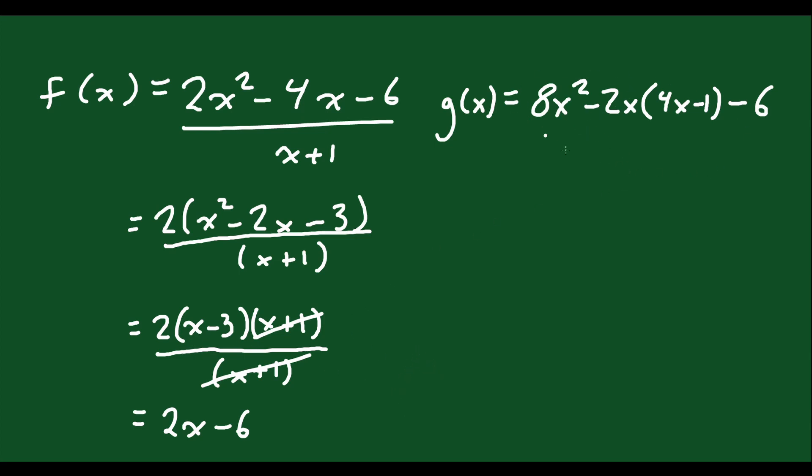Now, g(x), if we want to simplify this, we would have 8x squared. We would expand this bracket. So you'd have minus 8x squared plus 2x, and then minus 6. 8x squared minus 8x squared will cancel, and you're left with 2x minus 6.